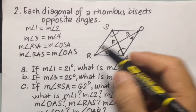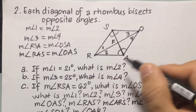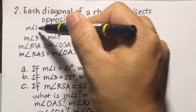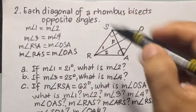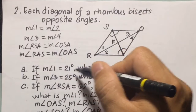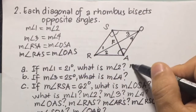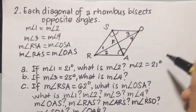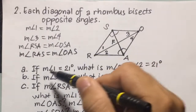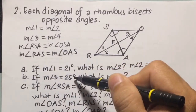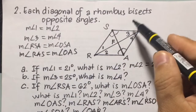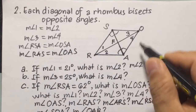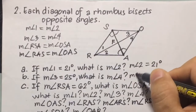Letter A. If the measure of angle 1 is 21 degrees, what is the measure of angle 2? Since measure of angle 1 equals measure of angle 2, measure of angle 2 is 21 degrees. Now, if measure of angle 3 equals 25 degrees, what is the measure of angle 4? Angle 4 is also 25 degrees.